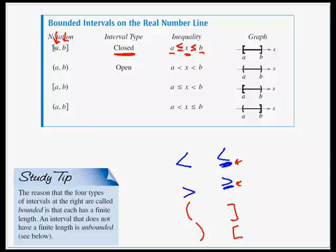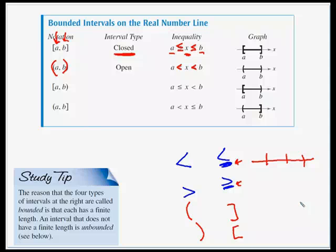We use brackets because of the 'or equal to' part. The next one uses parentheses — this is called an open interval. The only difference in the inequality is now we're using strictly less than signs, not less than or equal to. When graphing on the number line, a closed interval uses brackets on the graph. You might have used open and closed circles in Algebra 2 — an open circle was strictly less than or greater than, a closed circle was less than or equal to. We're just replacing those open and closed circles with brackets or parentheses.